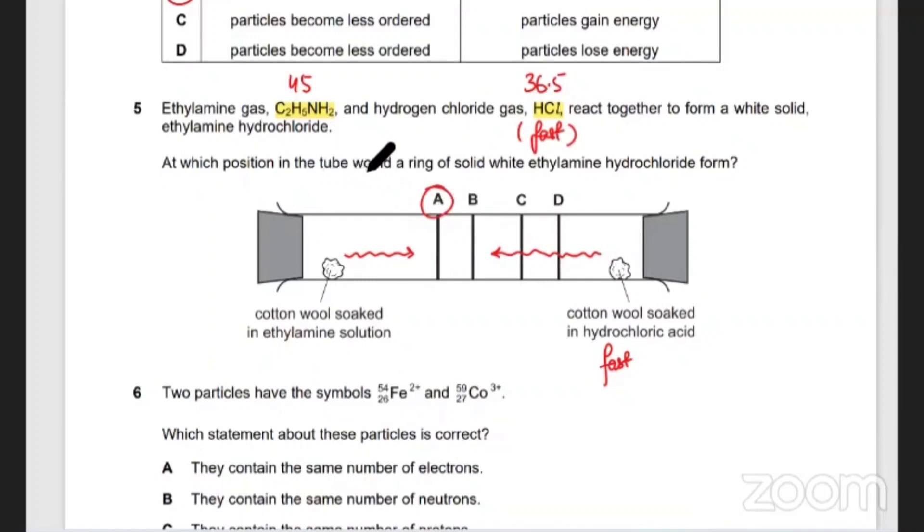So A is the answer. So in which position in the tube will you see a ring of white solid ethylamine hydrogen chloride, whatever that is? That's going to be A, that's where they're going to meet.